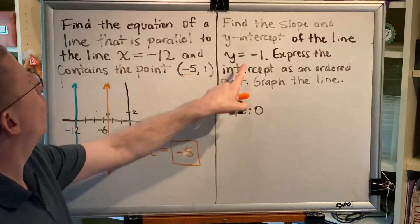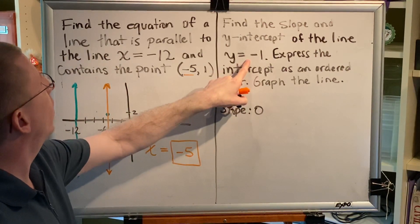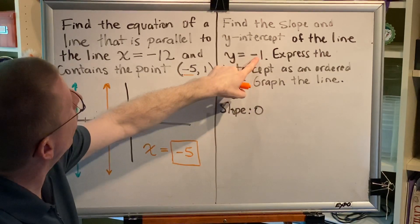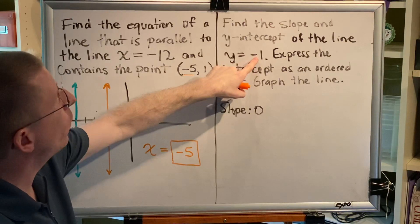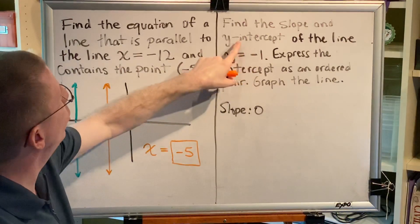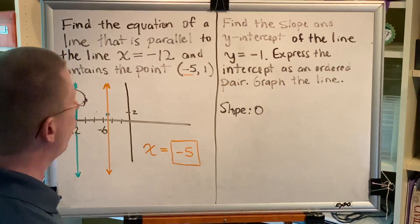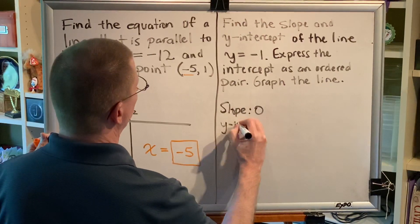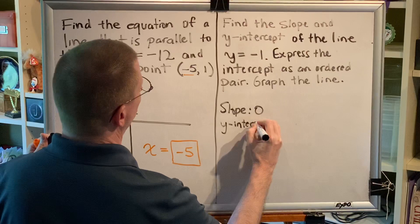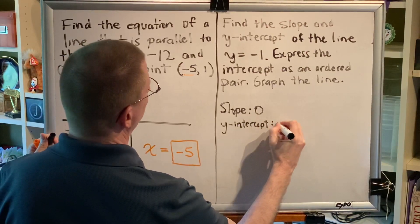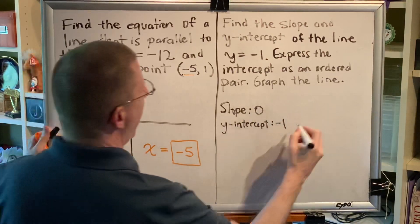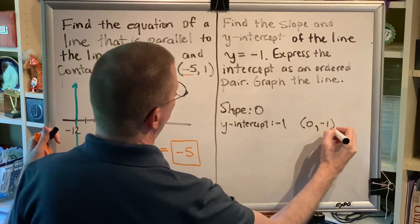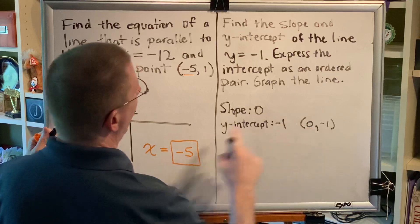Next, we know that if a line is horizontal and its equation is y equals negative 1, that this number right here represents the y-coordinate of every point on that line, including the y-intercept. Therefore, the y-intercept must be negative 1. As an ordered pair, that would be the coordinates 0 comma negative 1, because for a y-intercept, x is 0.